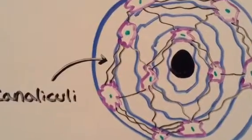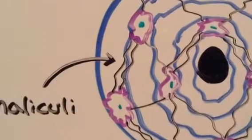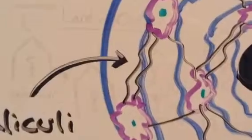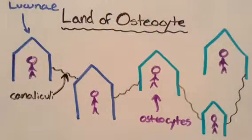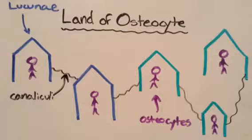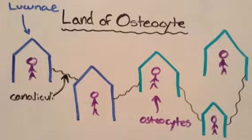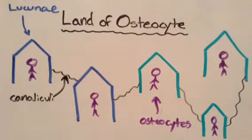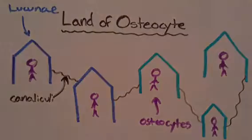The last major structure is the canaliculi. They are tiny canals that connect the lacunae and act as a transport system that allows oxygen to get to the lacunae. In the land of osteocyte, the osteoclasts and osteoblasts live in their little lacunae huts, and the canaliculi act as transport systems like little telephone wires.